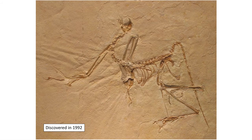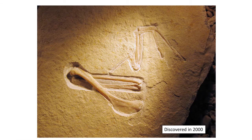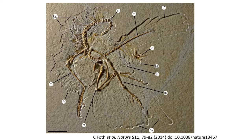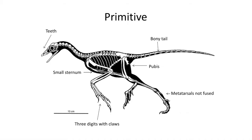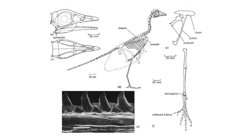Let's look at the anatomy of Archaeopteryx and see why it is a transitional fossil between dinosaurs and birds. Archaeopteryx features six primitive traits shared with earlier dinosaurs, like the small theropod dinosaurs from the Mesozoic. The first trait is the presence of thecodont teeth in the jaws. Archaeopteryx lacks a beak or rhamphotheca, and these teeth resemble those of a small theropod dinosaur.